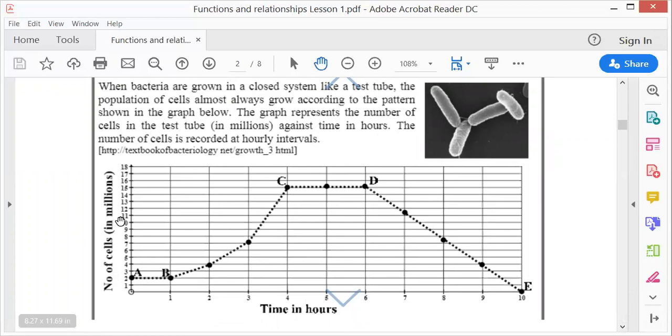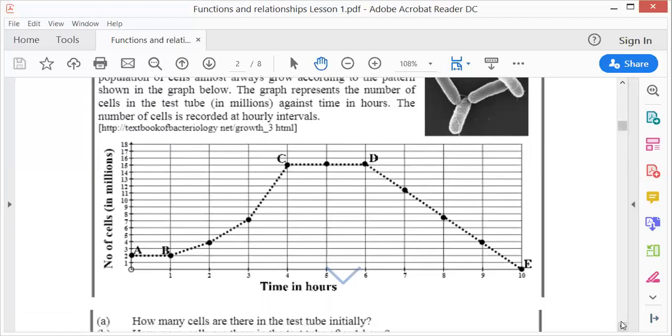On the x-axis is time in hours. On the y-axis is number of cells in millions. If you look at this graph, you see dots, so you immediately know it's discrete, not continuous. A lot is happening. It's not a straight line. It's what we call a broken line.